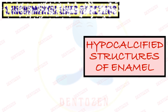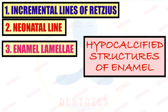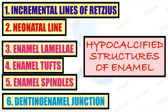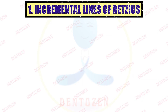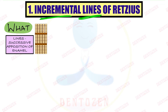The hypocalcified structures of enamel are incremental lines of Retzius, neonatal line, enamel lamellae, enamel tufts, spindles, and dentino-enamel junction. Starting with the first — as the word says, these are lines present between increments, that is, parts of enamel. These lines represent the successive apposition of enamel, meaning enamel is deposited in layers in increments with a weekly rhythm, and in between these increments we can see these lines, which are known as incremental lines of Retzius.